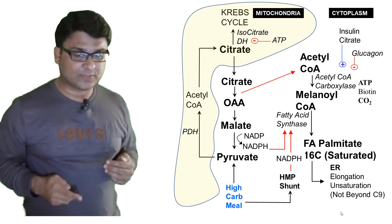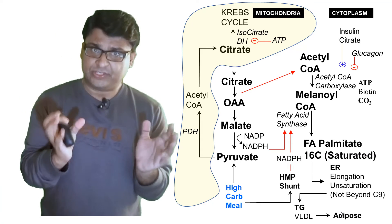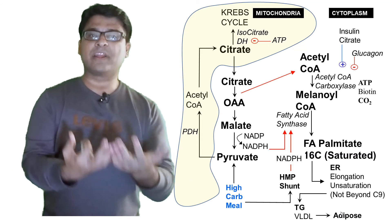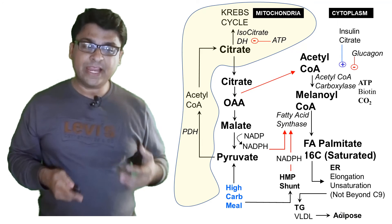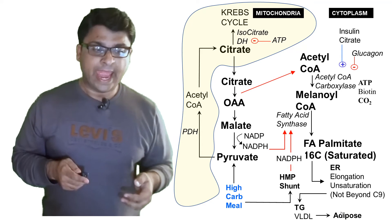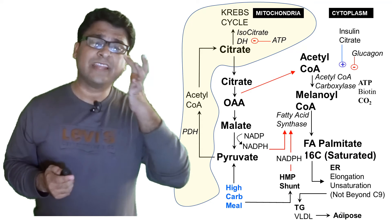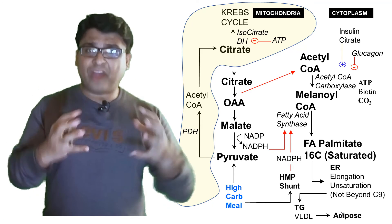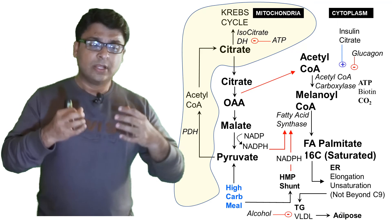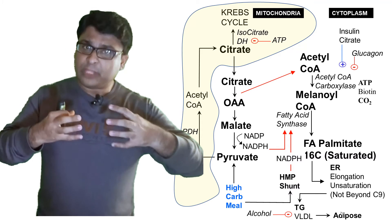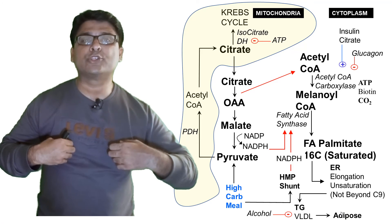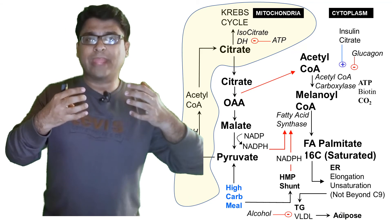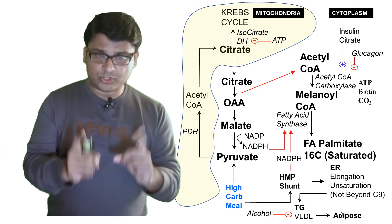Once the fatty acids are made, they come out of the organ — for example, the liver — as triglycerides packaged in VLDL, which is then stored in adipose tissue. An important clinical correlate: in alcoholics, the packaging of fatty acids into triglycerides is disturbed. Alcoholics do produce fatty acids, but those fatty acids cannot be released out of the liver, so all the fat produced is stored inside the liver — resulting in fatty liver.